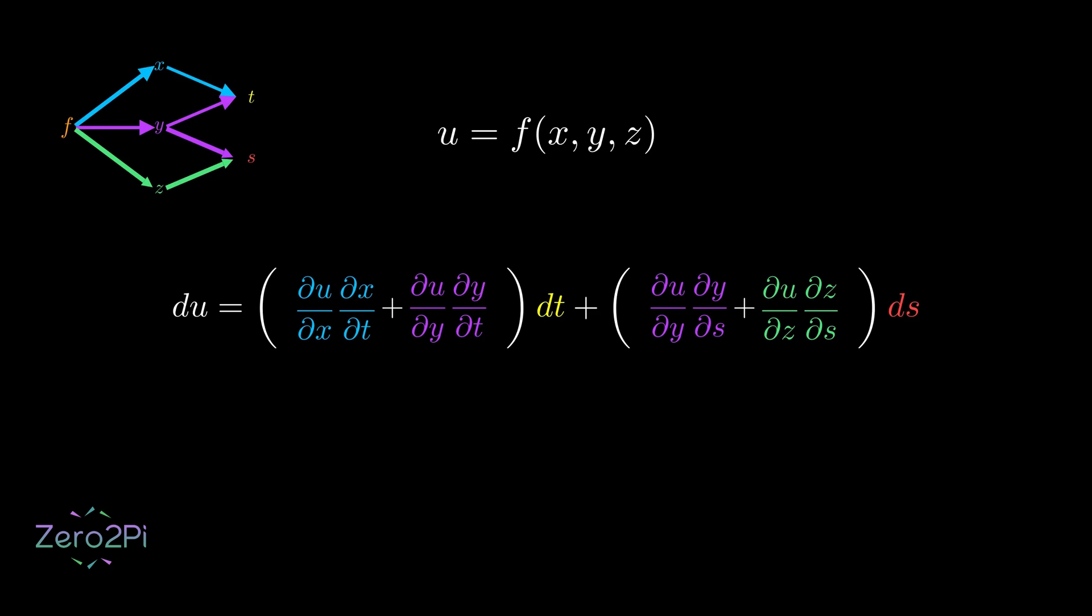This is the total differential. It captures the complete picture of how u changes when we nudge all of its underlying independent variables. Here's a practice problem with this exact dependency structure if you'd like to try it yourself.